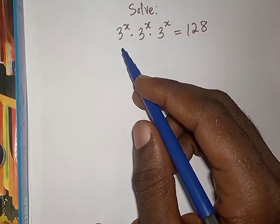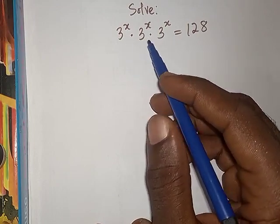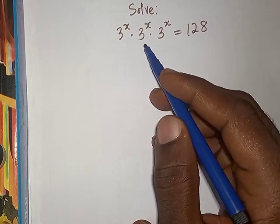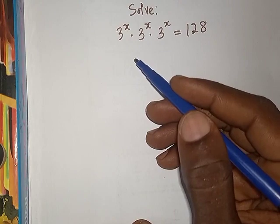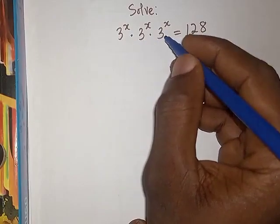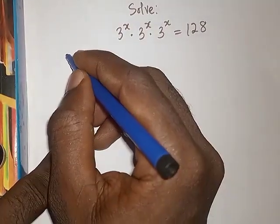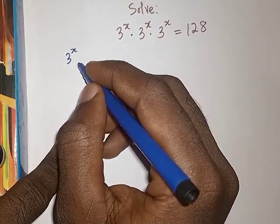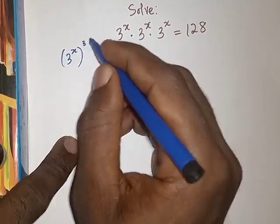3 to power x dot 3 to power x dot 3 to power x. Dot means multiplication. Therefore it means 3 to power x is multiplying itself 3 times. So what are we going to do? If this is multiplying itself 3 times, we have like two ways we can do this. This can be 3 to power x multiplying itself 3 times, which equals 128.